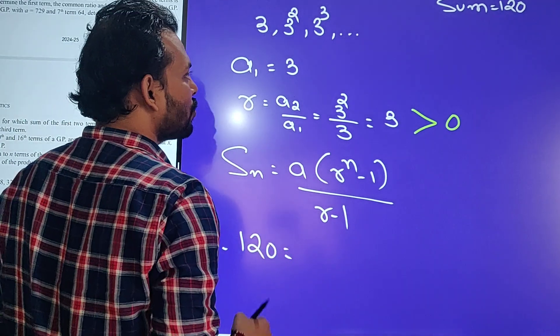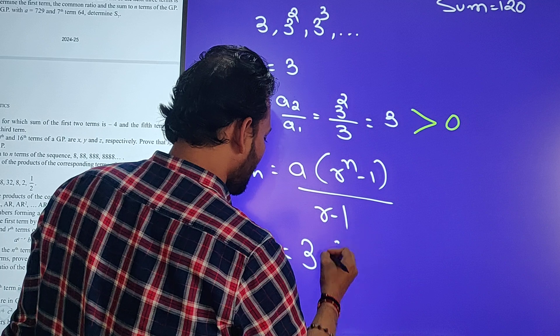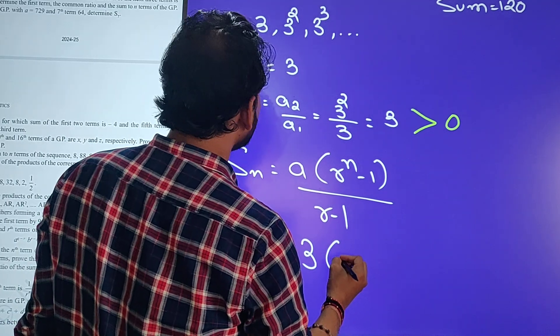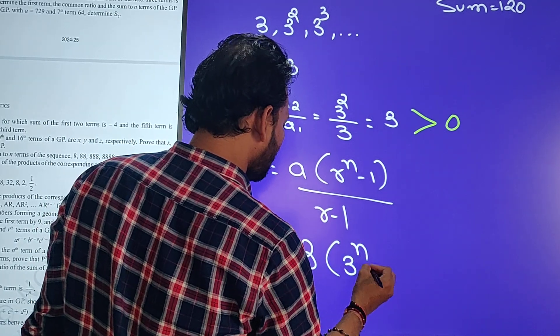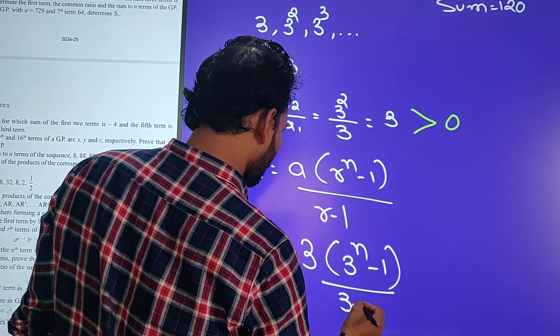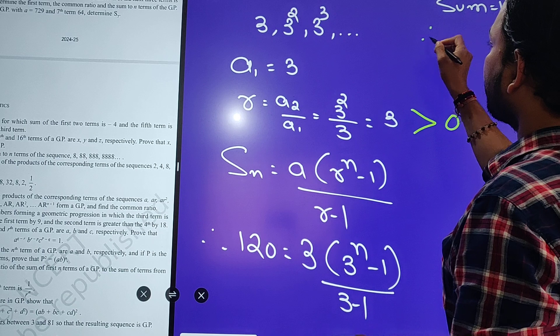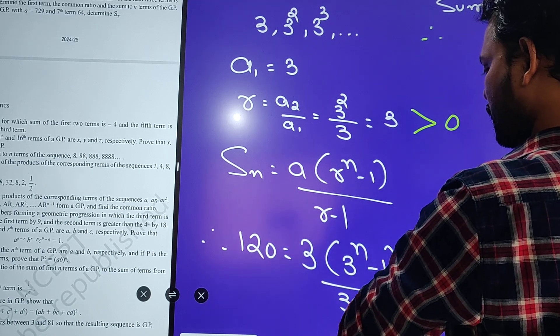So a kitna ho? N nahi, a toh pata hai na. A hai 3. Okay. R, R kitna hai? Voh bhi 3. Okay. 3 raise to n minus 1 upon 3 minus 1. Yes. So ho jayega ye. Okay. Kitna ho jayega? Yeh 2 ho jayega? Yes.